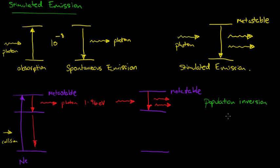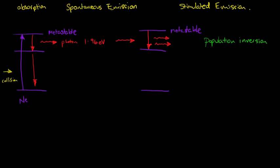Population inversion means that there are more atoms in this metastable state than there are in the E2 or the ground state. So, 1.96 eV.